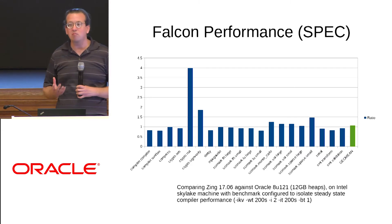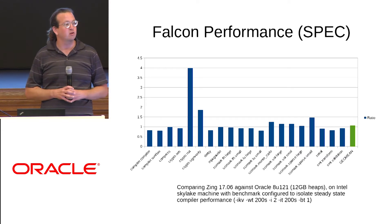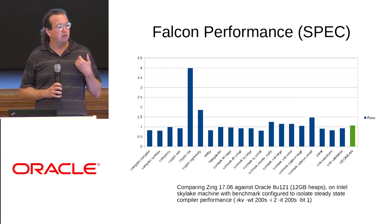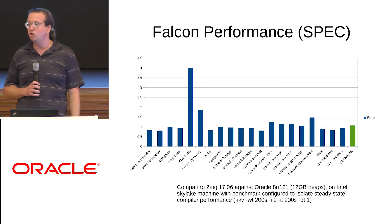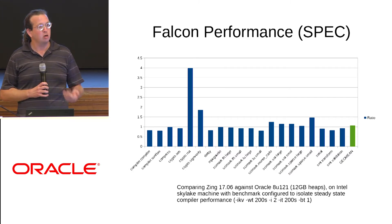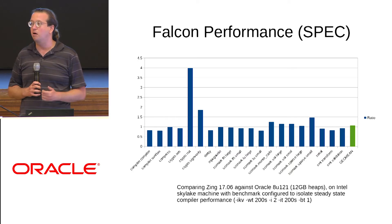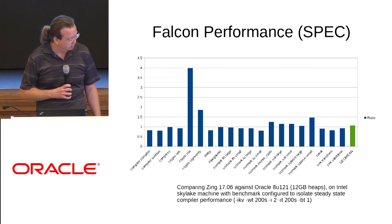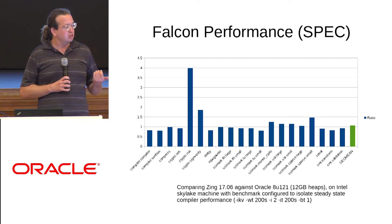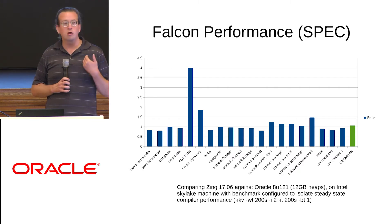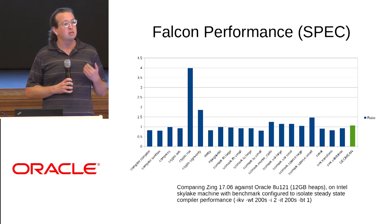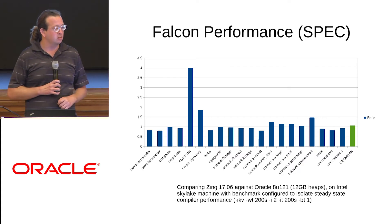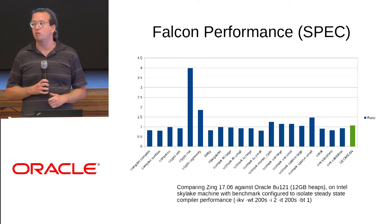This is probably the slide most of you are most curious about, which is current performance. Looking at a GeoMean across various benchmarks, we are pretty much on par or slightly ahead of Oracle C2 today. There is a lot of variation — some benchmarks we do very well on, some we're still working on, and we have room for improvement. But the overall picture is quite positive.